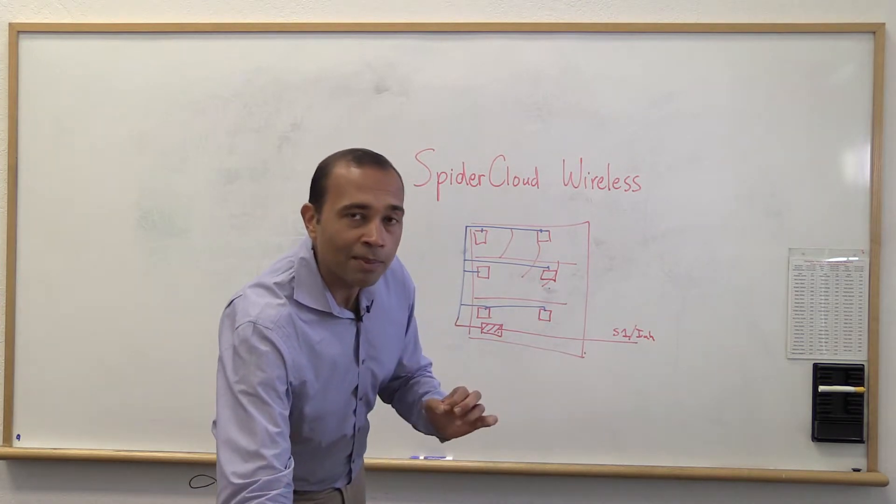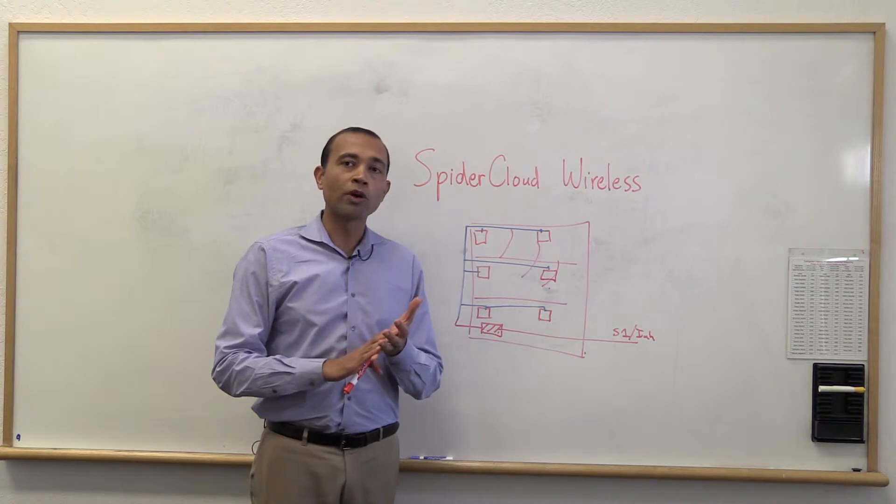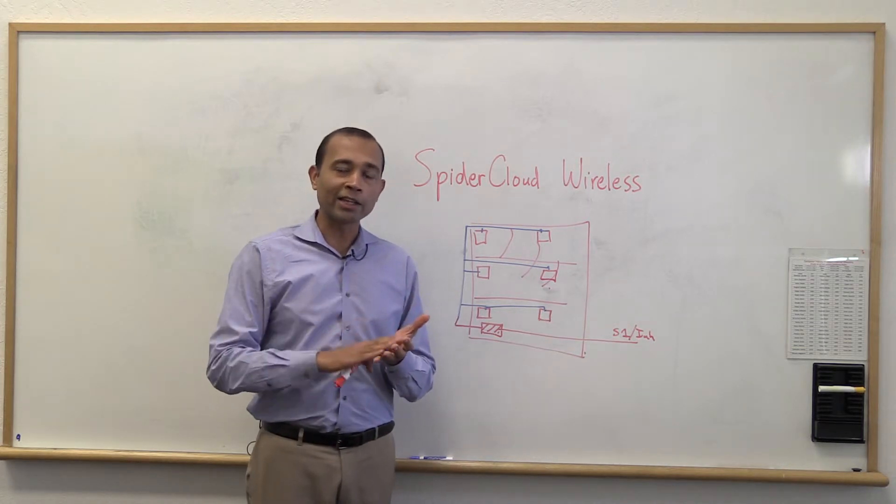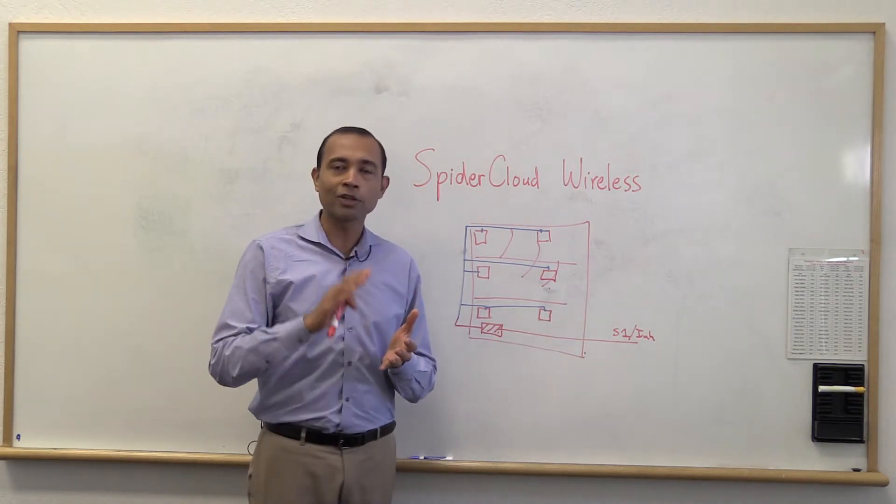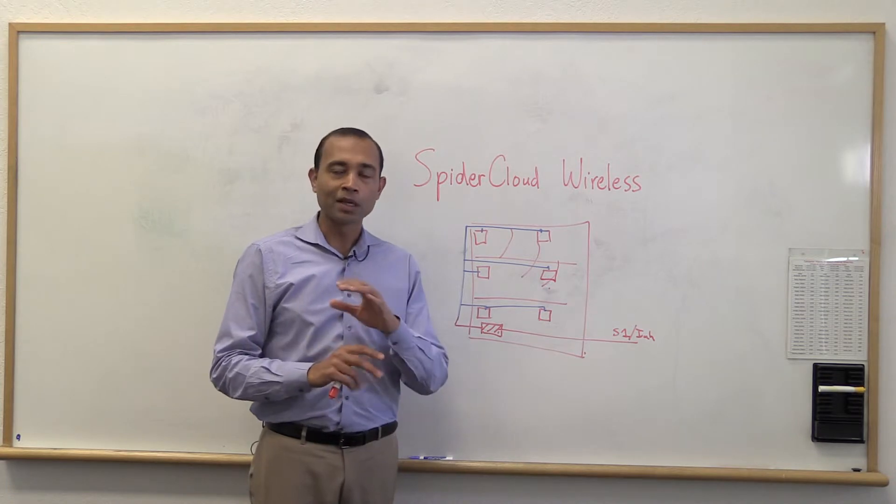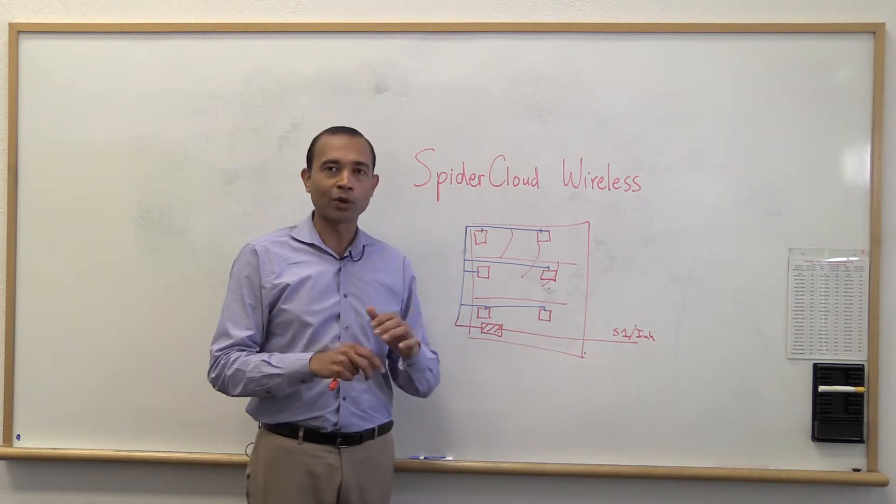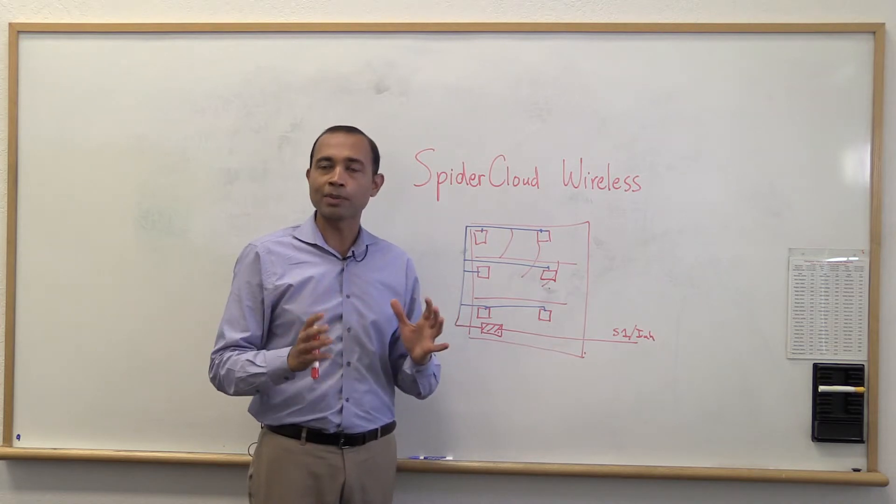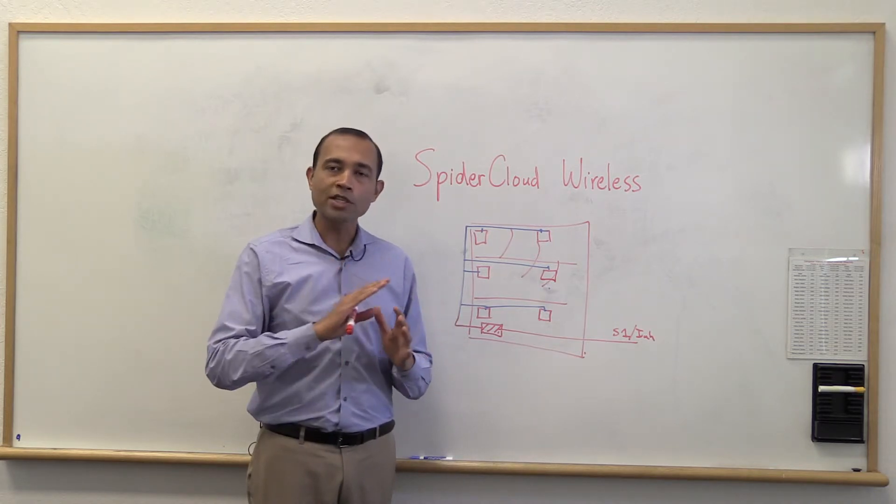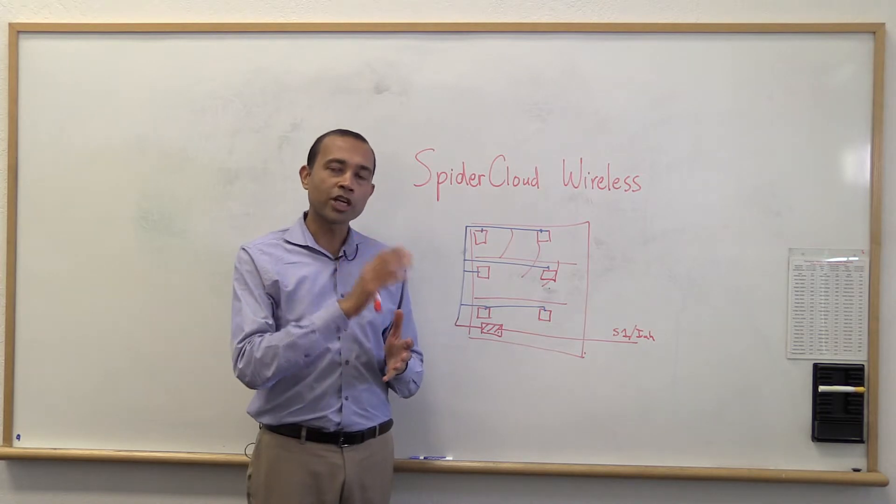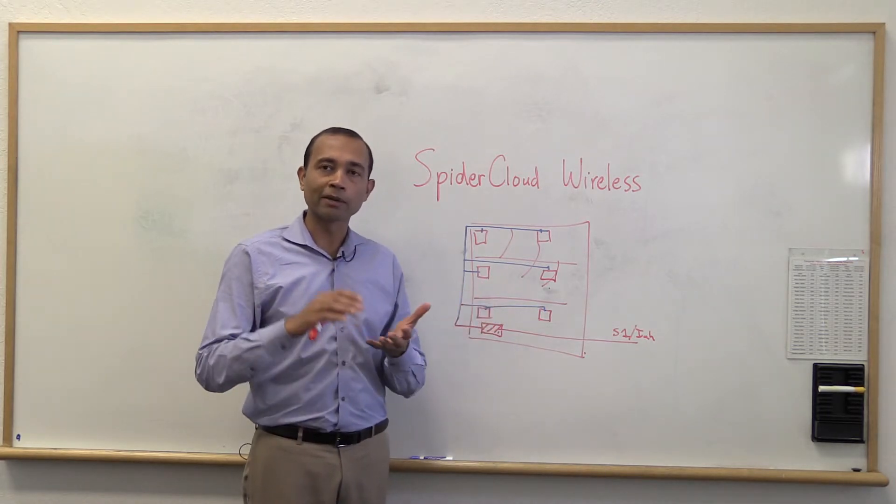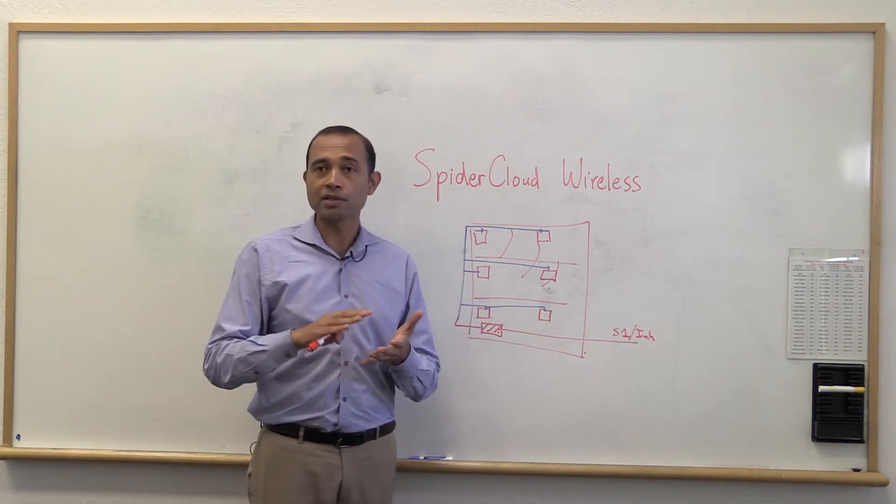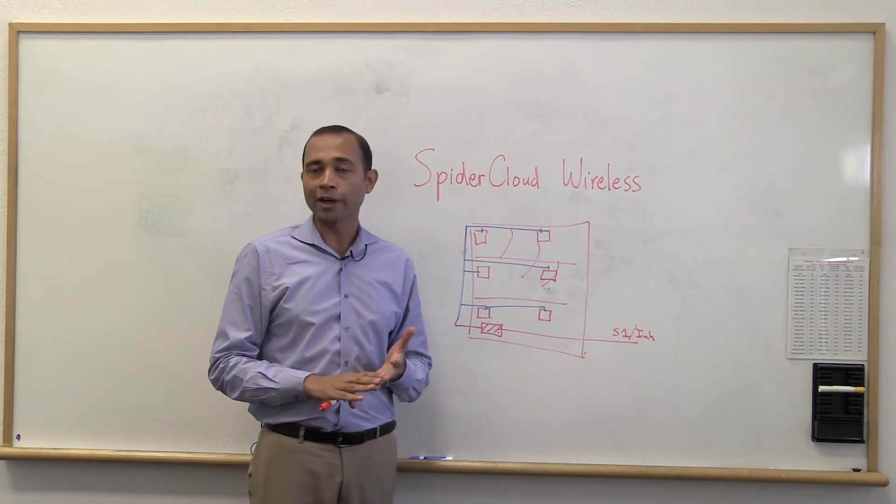One of the unique things about SpyderCloud's technology is that our small cells work over Ethernet. And when I say Ethernet, I really mean the Ethernet LAN that you have in your building. This is not just a Cat5 cable. We're not trying to run radio, analog, IF like some other people do over Cat5. We just use the normal Ethernet. And that's why we can share the LAN with whatever you have in your building, whether it's your PCs, your printers, or your Wi-Fi APs.